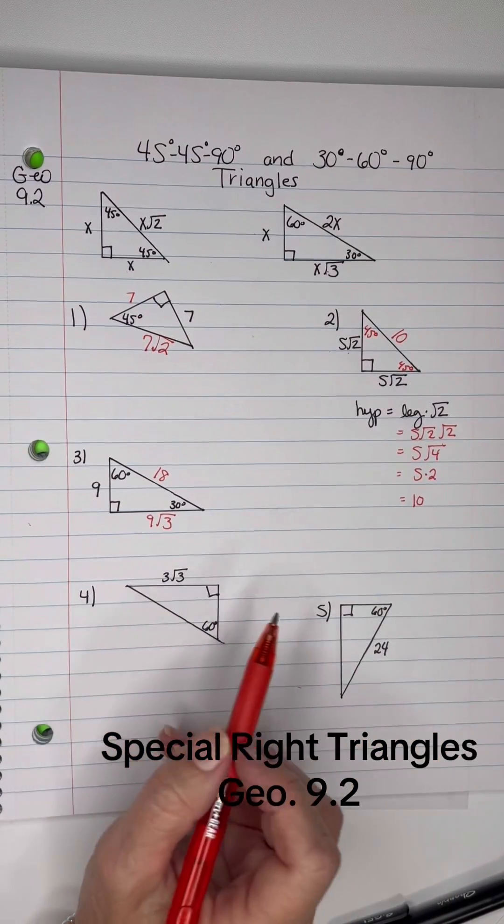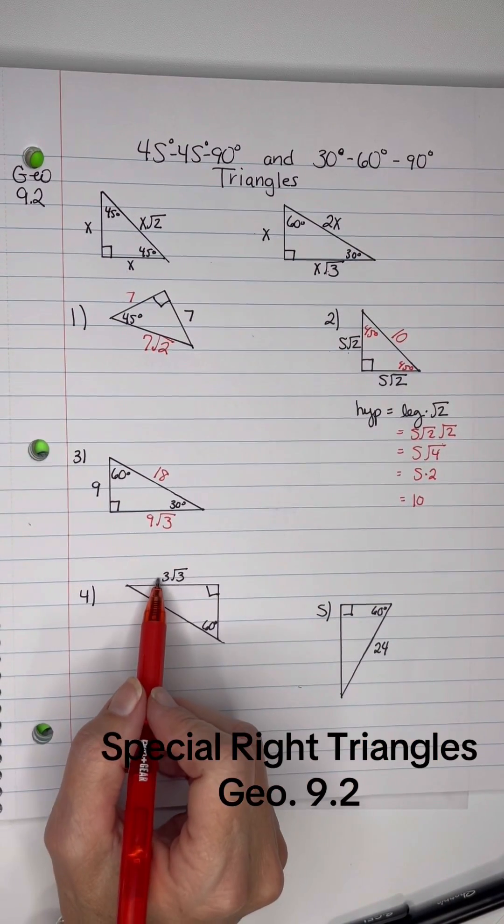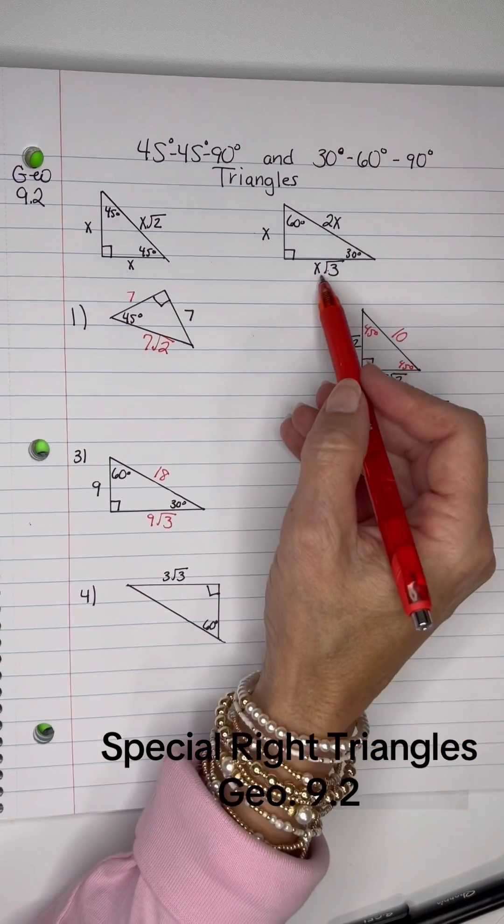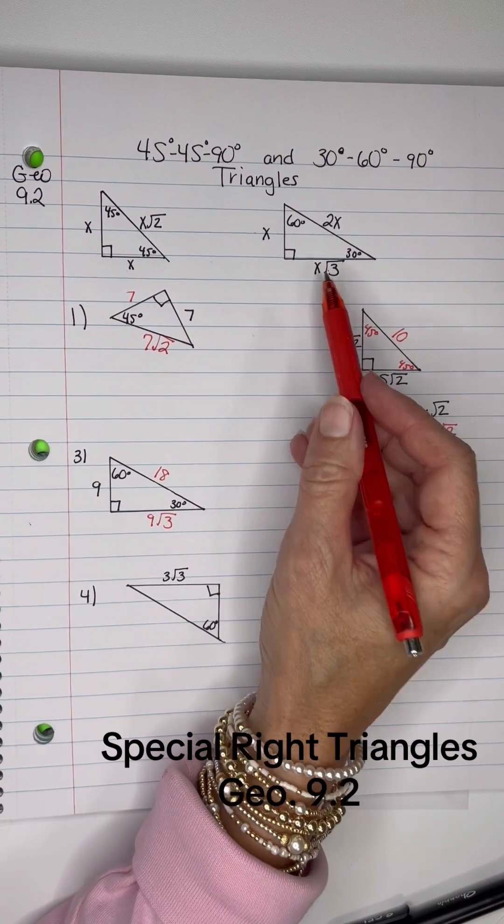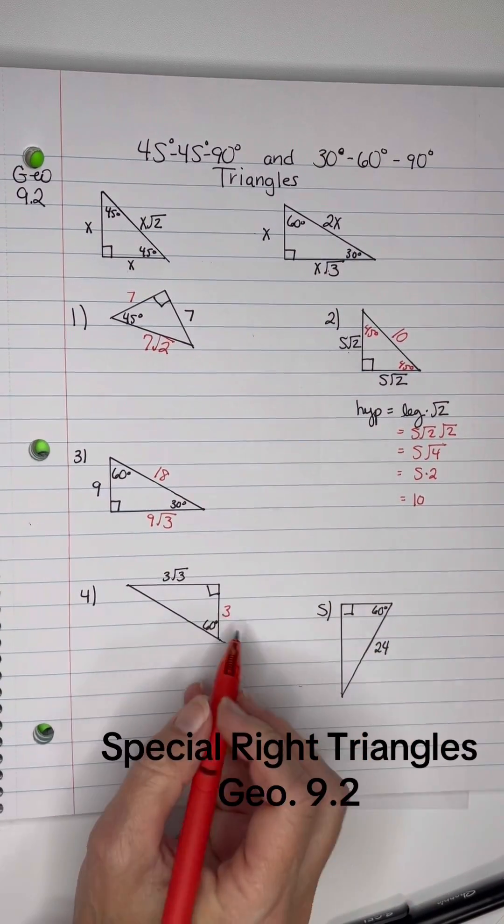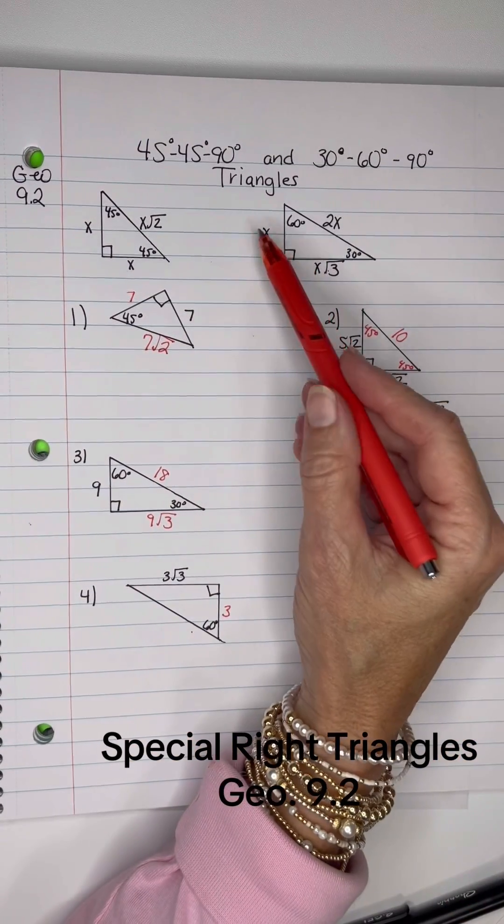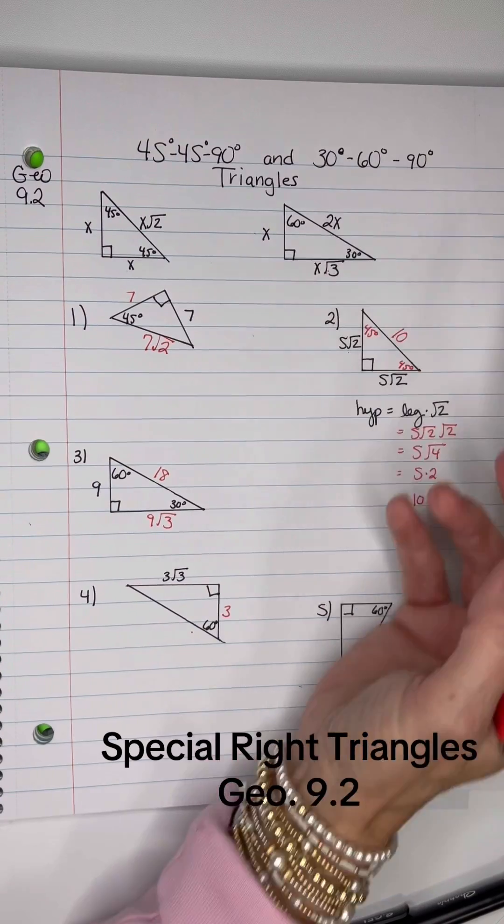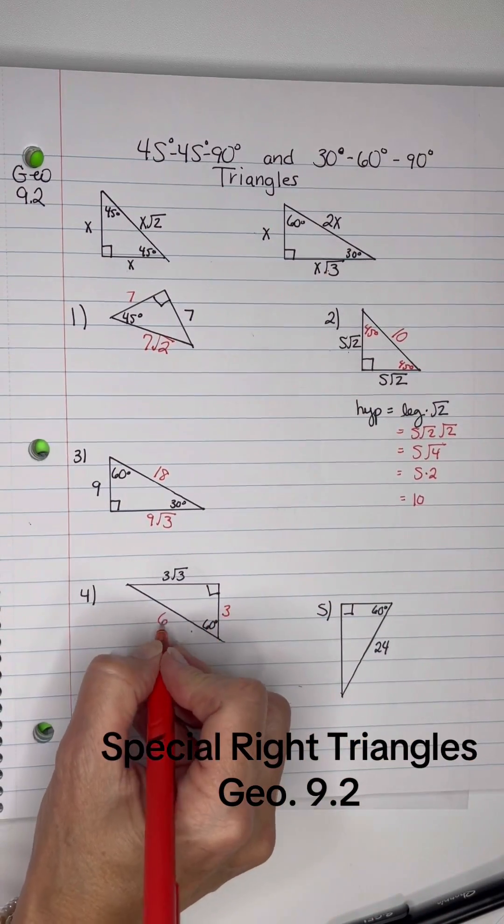And then on this one here, we have the longer leg, which is 3 root 3. And the short leg is going to be whatever is in front of root 3, so that's 3. And then if I want the hypotenuse, I know I take the short leg and multiply it by 2. So 3 times 2 is 6.